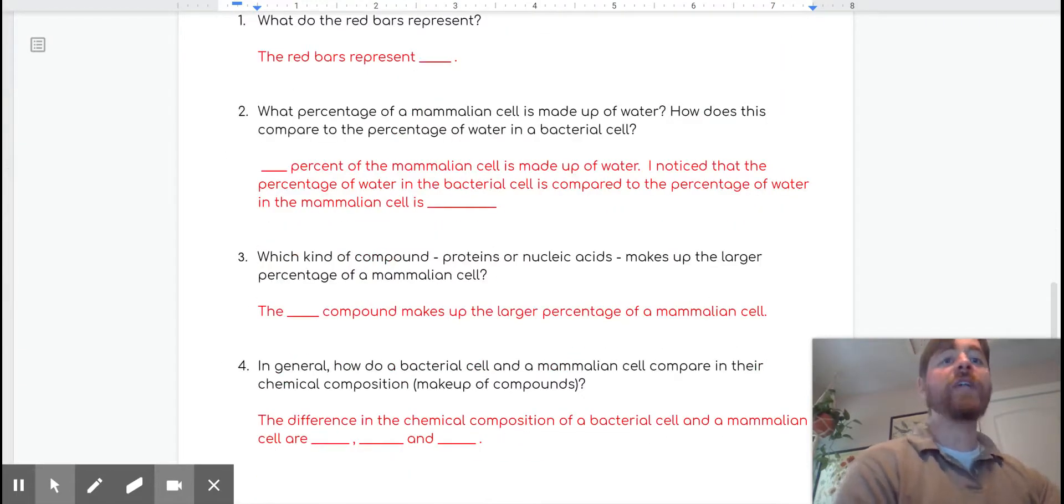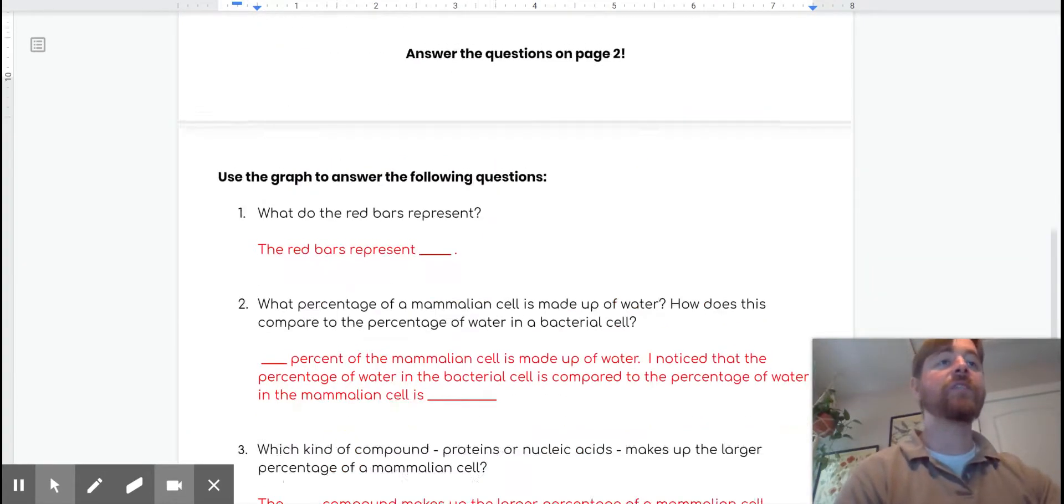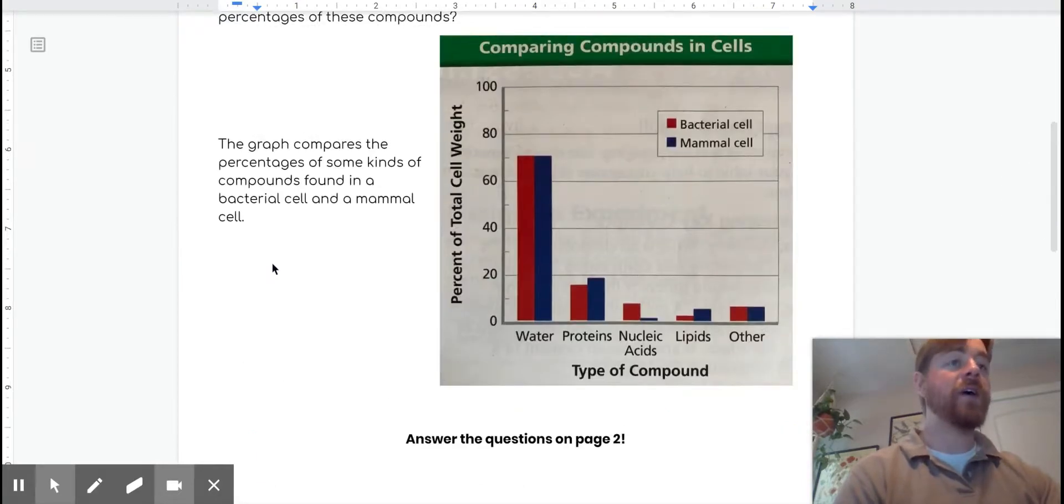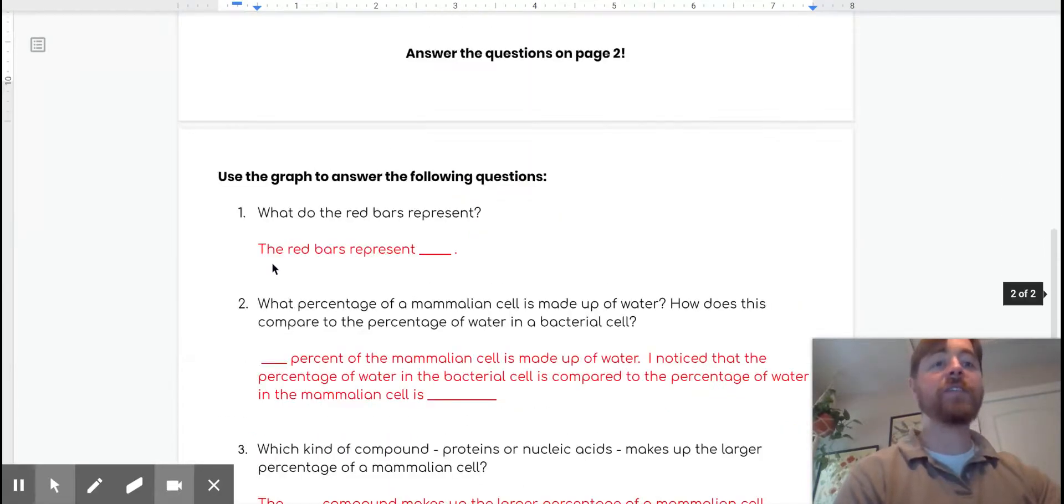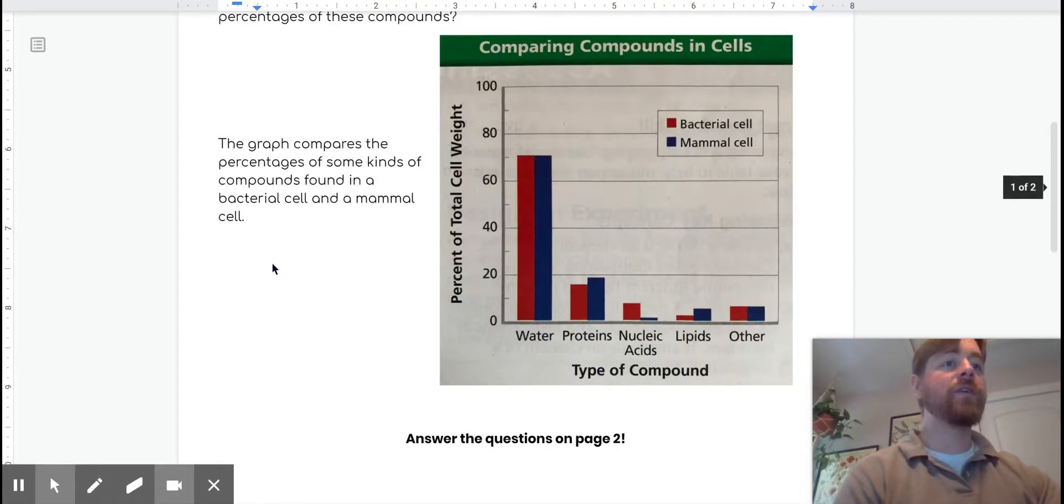Question three, which kind of compound, proteins or nucleic acid, make up the larger percentage of mammalian cells? So just between proteins and nucleic acids, which one makes up the larger percentage? So we just go back to our graph, find nucleic acids and proteins, mammal cells, the blue, which one is greater? Which one is more?